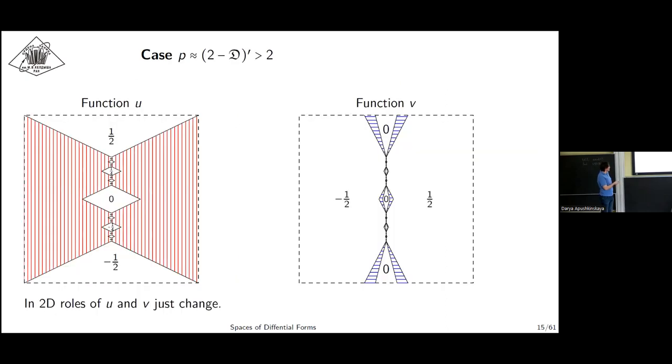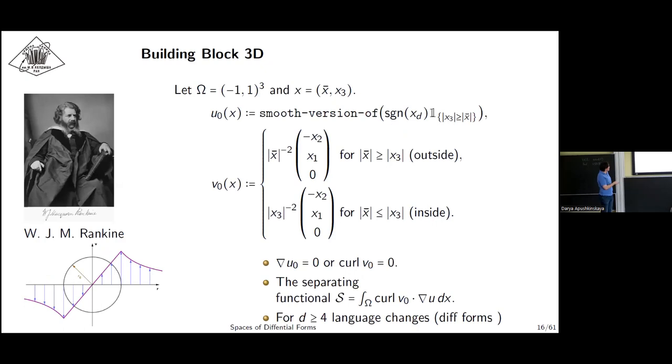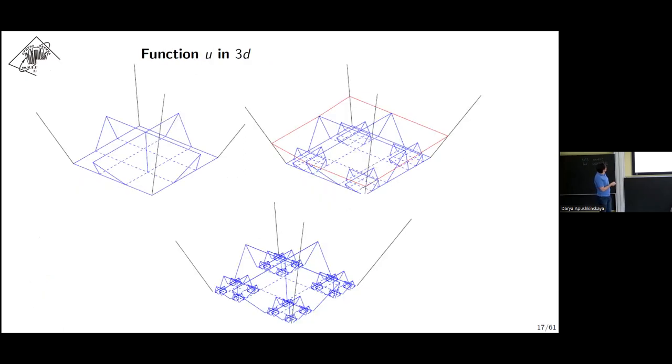One can evaluate its integrability directly in this simple case. In 3D, this separating vector field is constructed as rotor of something, and for higher dimensions the language changes. One can use differential forms or skew symmetric matrices or divergence of skew symmetric matrices. This is how function U can be constructed in 3D.